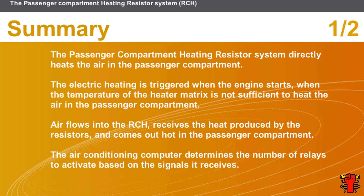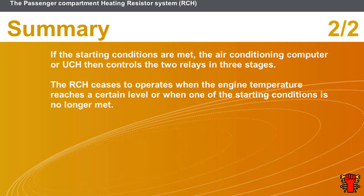In this section we covered the following points: the passenger compartment heating resistor system directly heats the air in the passenger compartment. The electric heating is triggered when the engine starts, when the temperature of the heater matrix is not sufficient to heat the air in the passenger compartment. Air flows into the RCH, captures the heat produced by the resistors, and comes out hot in the passenger compartment. The air conditioning computer determines the number of relays to activate based on the signals it receives. If the starting conditions are met, the air conditioning computer or UCH controls the two relays in three stages. The RCH ceases to operate when the engine temperature reaches a certain level, or when one of the starting conditions is no longer met.